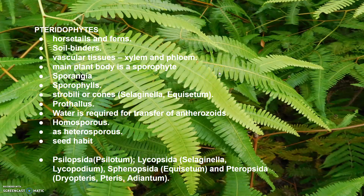In bryophytes, the dominant phase in the life cycle is the gametophyte plant body. But in pteridophytes, the main plant body is the sporophyte, which is diploid. It is differentiated into true roots, stems and leaves, and these organs possess well-differentiated vascular tissue — xylem and phloem. The leaves in pteridophytes are called sporophylls; microsporophylls are small, and in Selaginella the larger ones are called macrosporophylls. The sporophyte bearing sporangia extended into leaf-like structures are called sporophylls, and in some cases these form compact structures called strobili or cones, as in Selaginella and Equisetum.